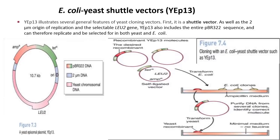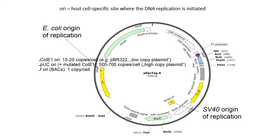The E. coli and yeast shuttle vector is also called the YEp13 vector. YEp13 illustrates several general characteristic features of a yeast cloning vector. First, it is a shuttle vector. It has a 2-micron origin of replication and a selectable LEU2 gene. YEp13 also includes the entire pBR322 sequence and can therefore replicate and be selected for in both yeast and E. coli hosts.